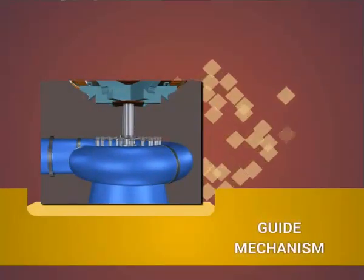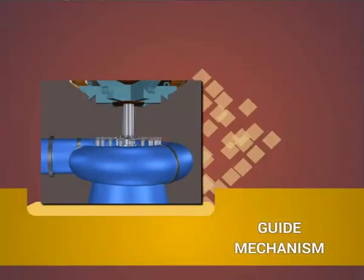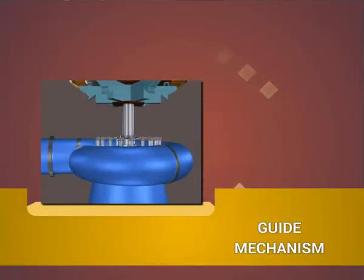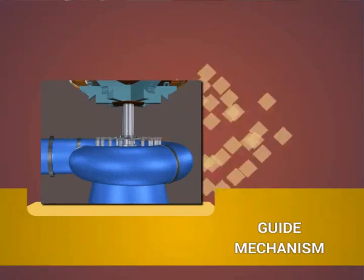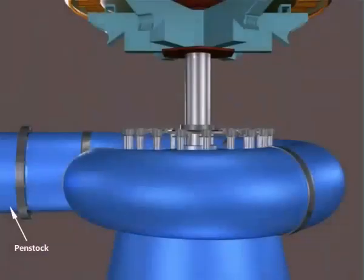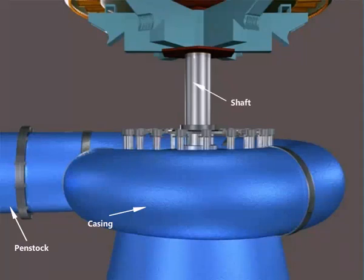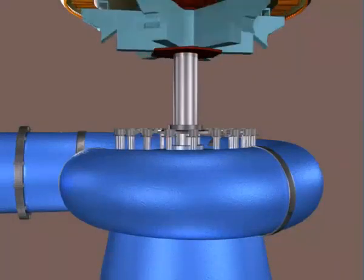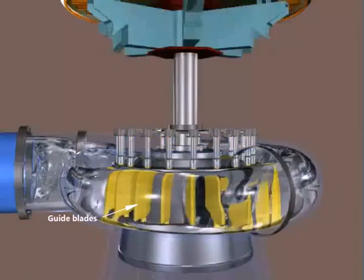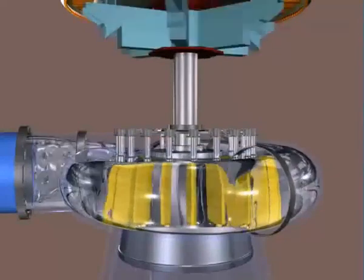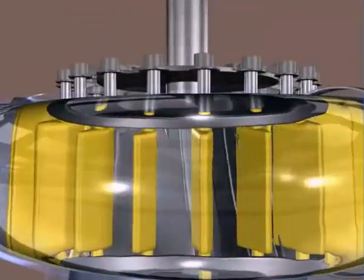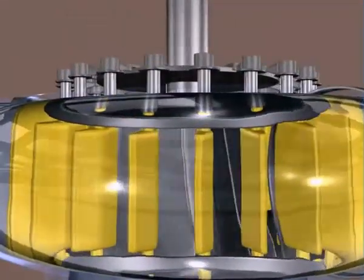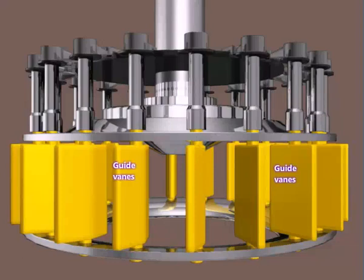Guide Mechanism. Let us see the 3D model of the guide mechanism: penstock, casing, shaft, generator, draft tube, guide blades, guide vanes.